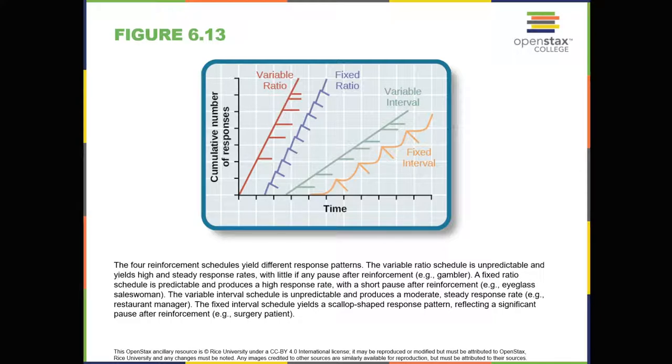With a fixed ratio reinforcement schedule, there are a set number of responses that must occur before the behavior is rewarded. Carla sells glasses at an eyeglass store, and she earns a commission every time she sells a pair of glasses. She always tries to sell people more pairs of glasses, including prescription sunglasses, or a backup pair, so she can increase her commission. She doesn't care if the person really needs the prescription sunglasses. Carla just wants her bonus. The quality of what Carla sells doesn't matter because her commission is not based on quality. It's only based on the number of pairs sold. This distinction in the quality of performance can help determine which reinforcement method is most appropriate for a particular situation. Fixed ratios are better suited to optimize the quantity of output, whereas a fixed interval, in which the reward is not quantity-based, can lead to a higher quality of output.